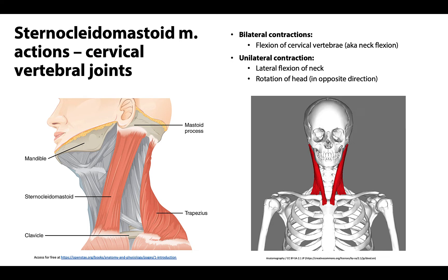Let's talk about these actions. If both sternocleidomastoid muscles are contracting — bilateral contraction — the main action is flexion of the cervical vertebrae, also known as neck flexion. This is where the chin would flex or bend down and get close to the more inferior attachments, close to that manubrium. Think of it as putting your chin to your chest.